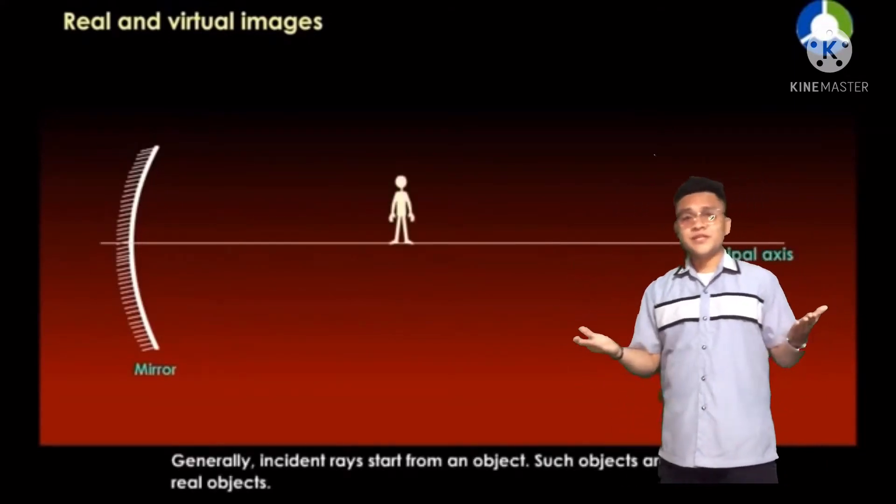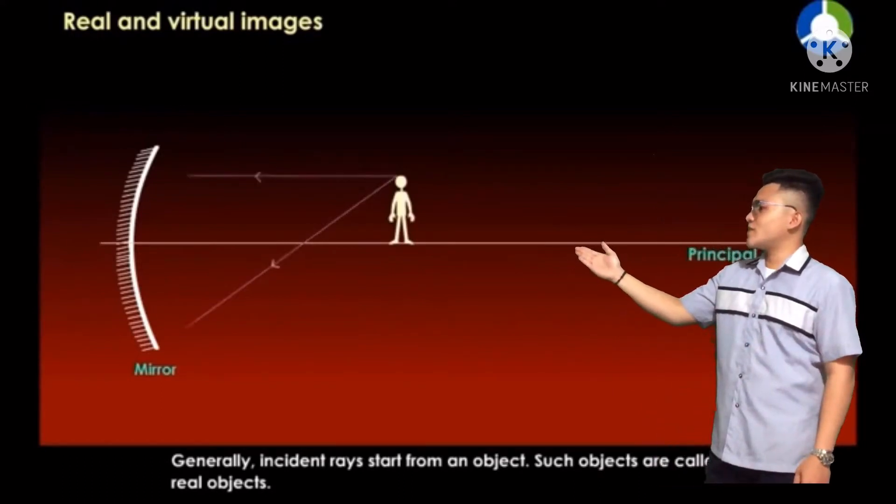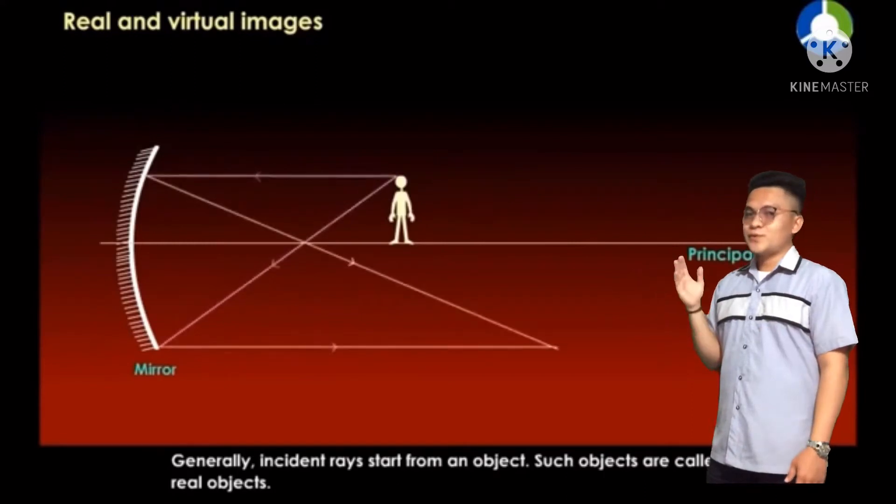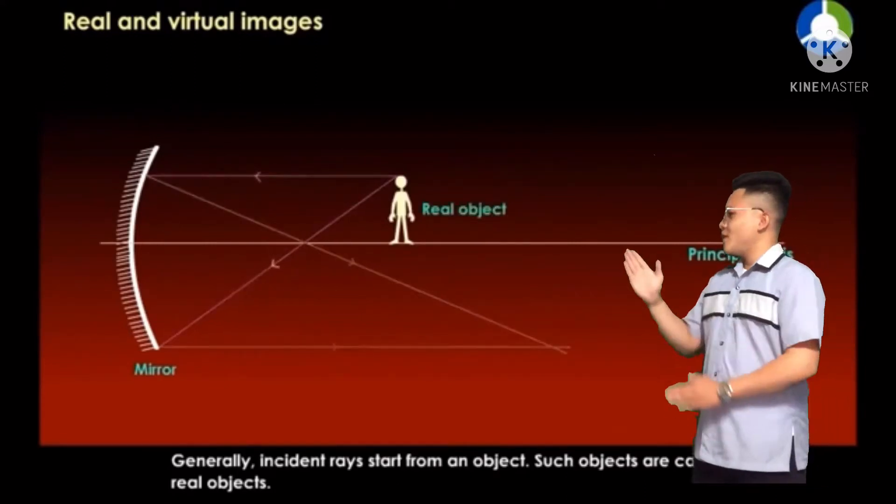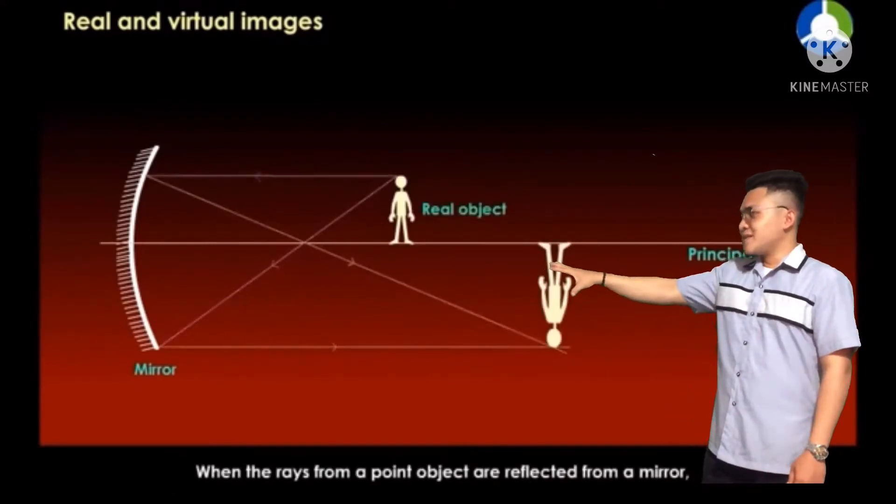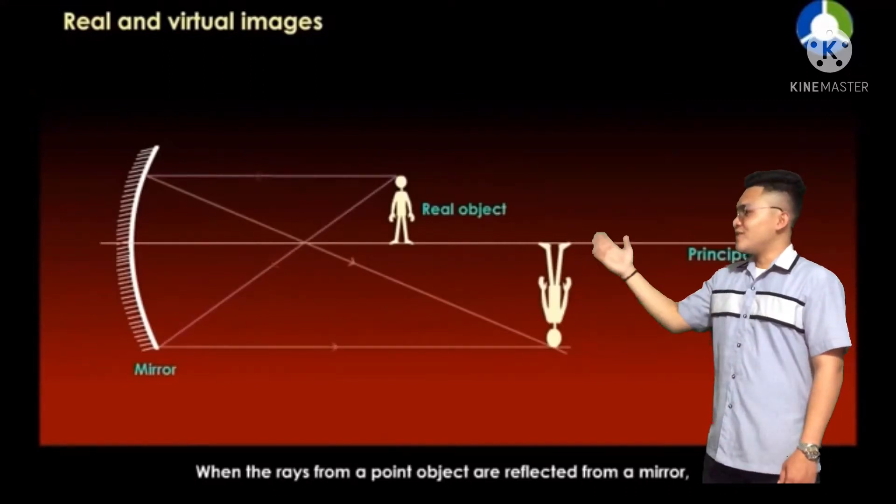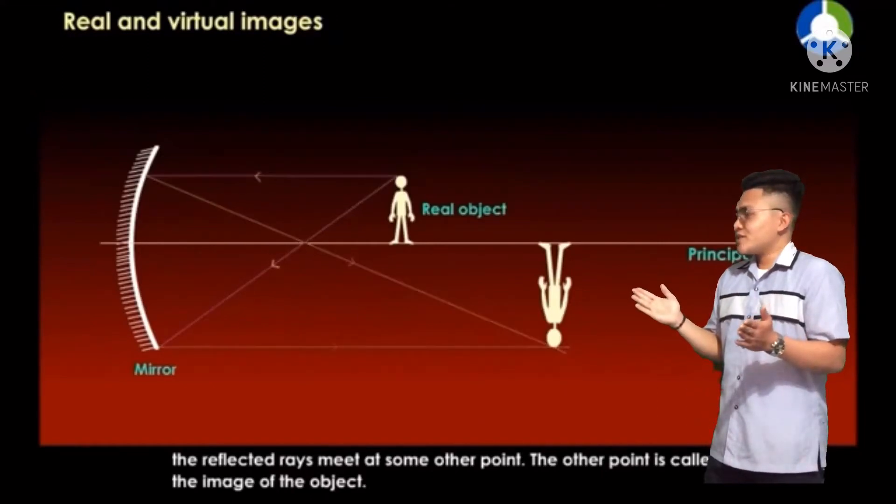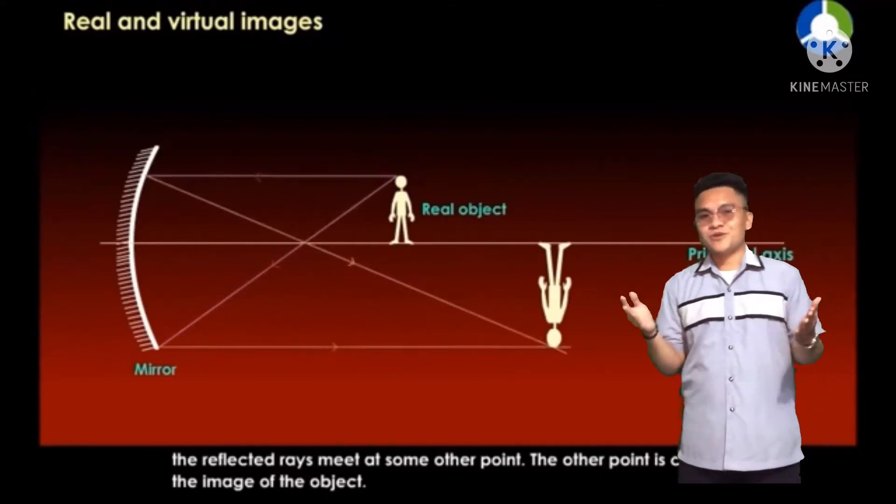Generally, incident rays start from an object. Such objects are called real objects. When the rays from a point object are reflected from a mirror, the reflected rays meet some other point. The other point is called the image of the object.